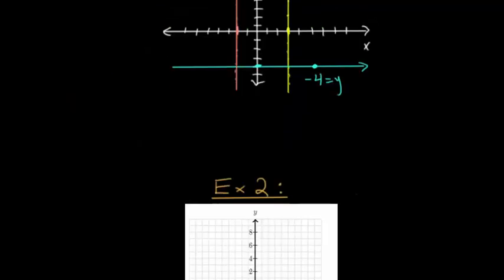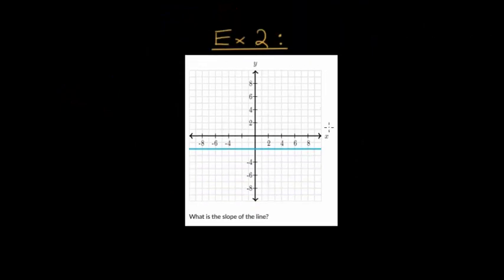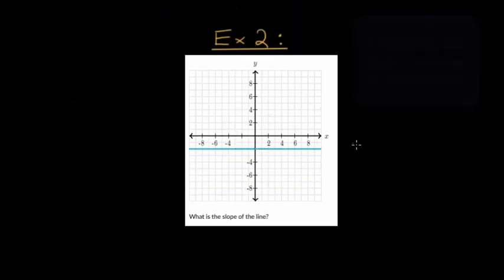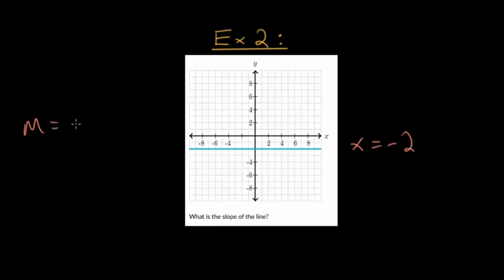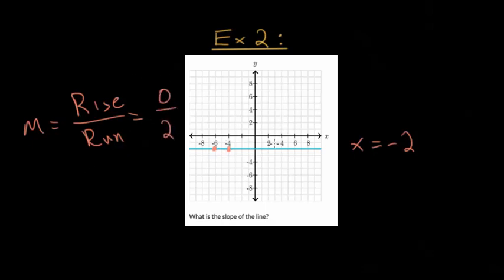Now let's try a different type of problem. We're given a line that looks like x equals negative two, and we're asked for the slope of the line. Slope M is defined as rise divided by run. Picking two random points, the rise is zero — the line does not go up and down — and the run is two. Zero divided by any number equals zero, so the slope of this horizontal line is simply zero.